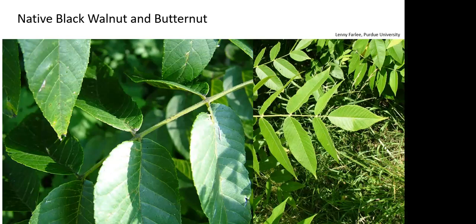A couple of lookalikes you may run into that you might confuse with Tree of Heaven are native walnuts — black walnut and butternut. But if you look closely at the leaflets on these species, you'll find very fine teeth or serrations all along the margins of the leaf and the leaflets, and typically the leaves are not as long as what we find on Tree of Heaven. Also, the fruit are round nuts in husks, whereas the fruit on Tree of Heaven is a very small winged seed.